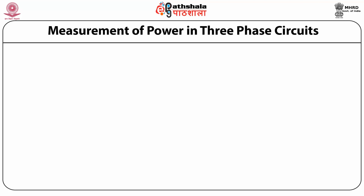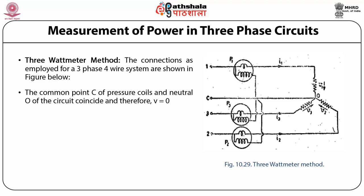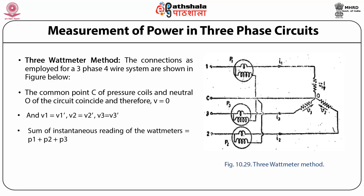Let us understand the measurement of power in three-phase circuits. First, the three wattmeter method. The connections for a three-phase four-wire system are shown in the figure. The common point C of the pressure coils and the neutral O of the circuit coincide, so V equals 0, and V1 equals V1', V2 equals V2', V3 equals V3'. The sum of instantaneous readings of the wattmeters gives the total power.